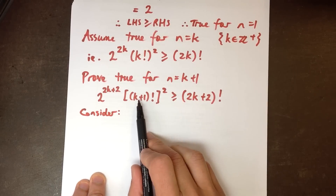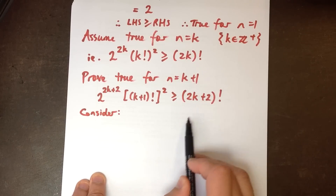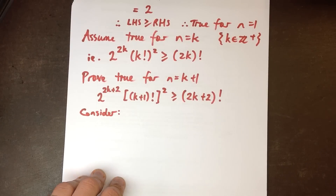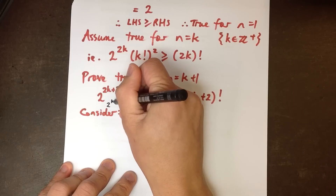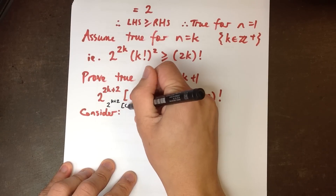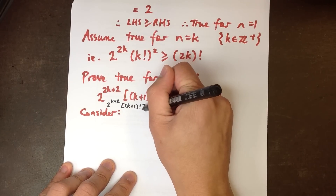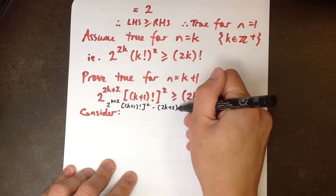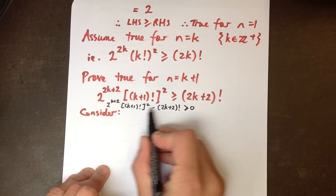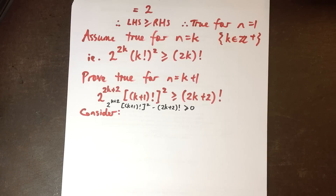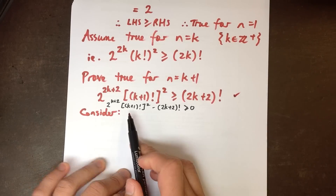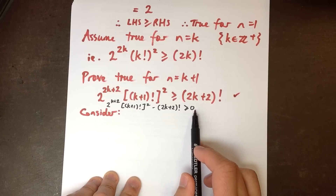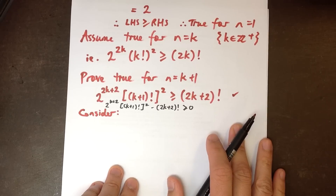What I'm going to think about is: what would happen if I move this part over to the left-hand side? It would look like 2 to the power of 2k plus 2 times k plus 1 factorial squared, minus the 2k plus 2 factorial. If I can prove that expression is greater than or equal to zero, then I've proved the original inequality. And proving something is positive is a little easier to work with — we can use algebraic tricks.